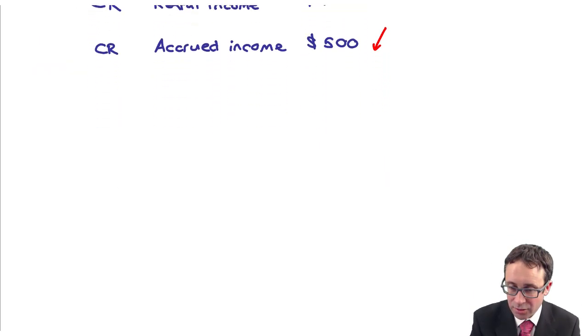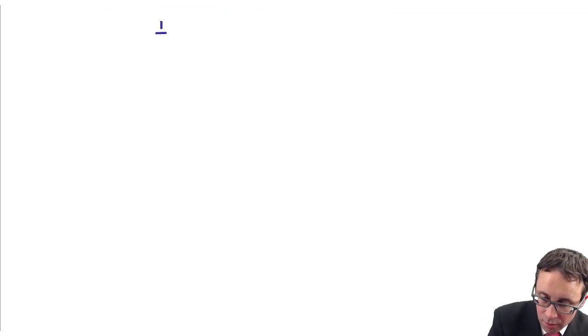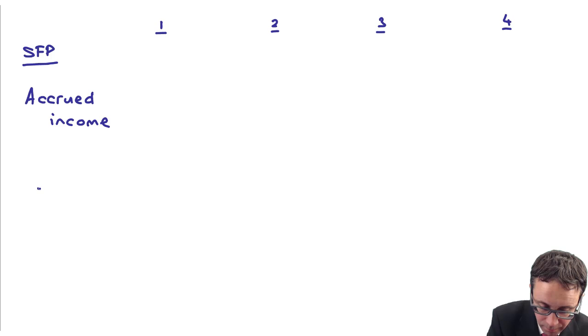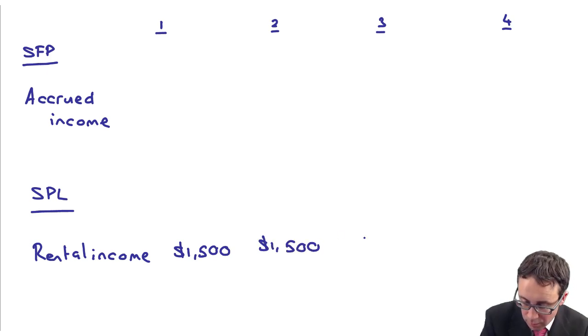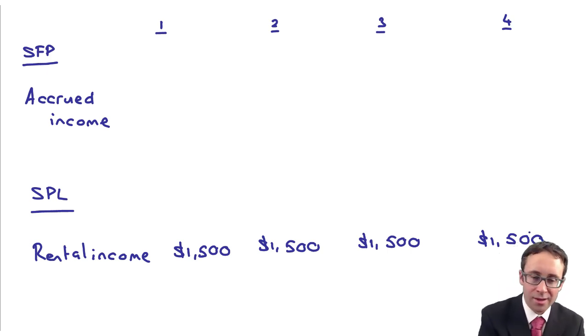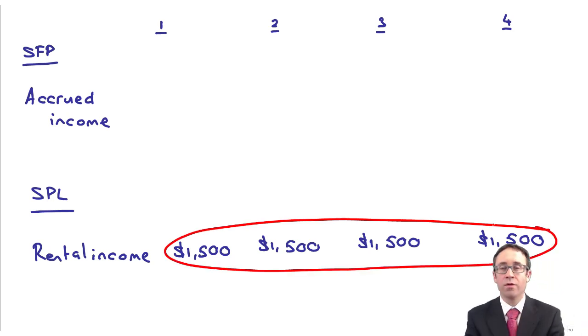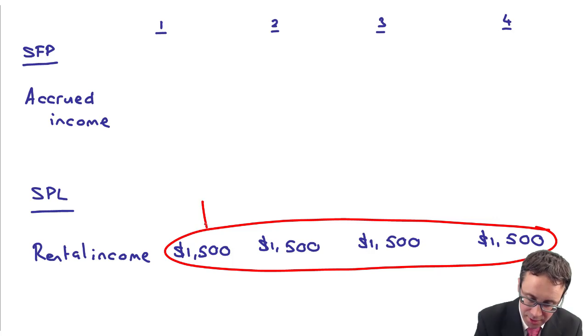If you want to see that in the financial statements, what you could do is for years one, two, three, and four, you've got on the SFP your accrued income. On the statement of profit or loss we have our rental income. So the rental income was nice and straightforward, that was just $1,500 for each of the four years. We've spread that total of $6,000 over the four year period. And the key bit there is that in year one we didn't receive cash, but we use the accruals principle.